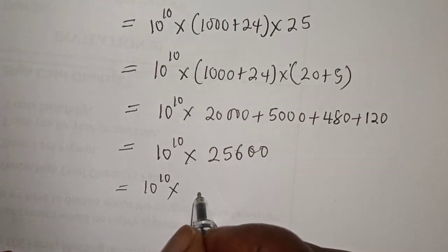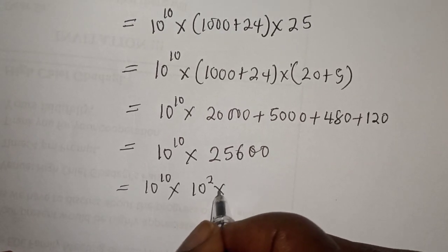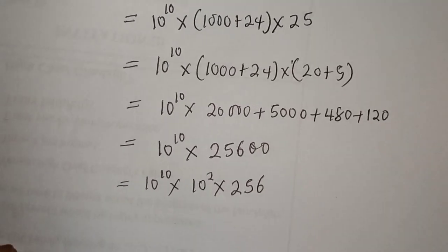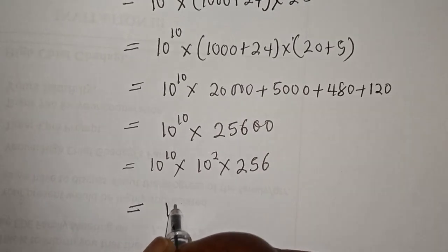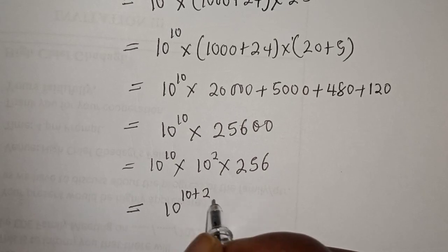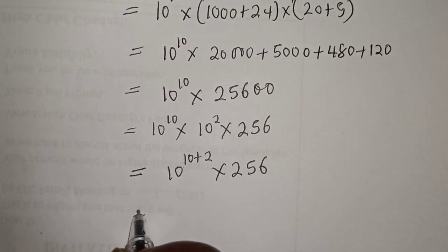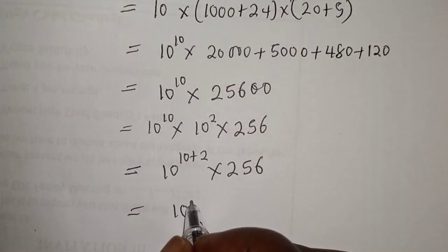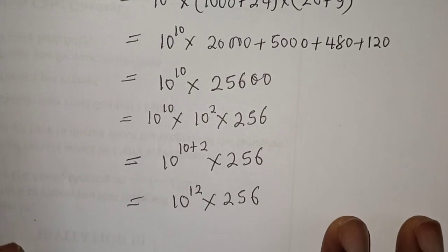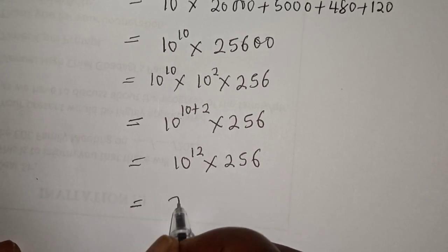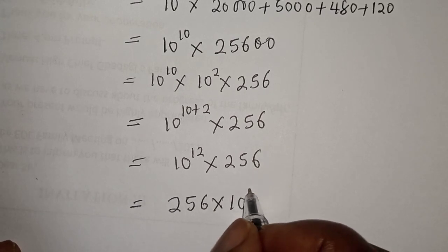25,600 can be written as 10 squared multiplied by 256. Then we have the same base with different powers, so this is equal to 10 raised to power 10 plus 2, multiplied by 256, which equals 10 raised to power 12 multiplied by 256. Therefore our final answer is 256 times 10 raised to power 12.